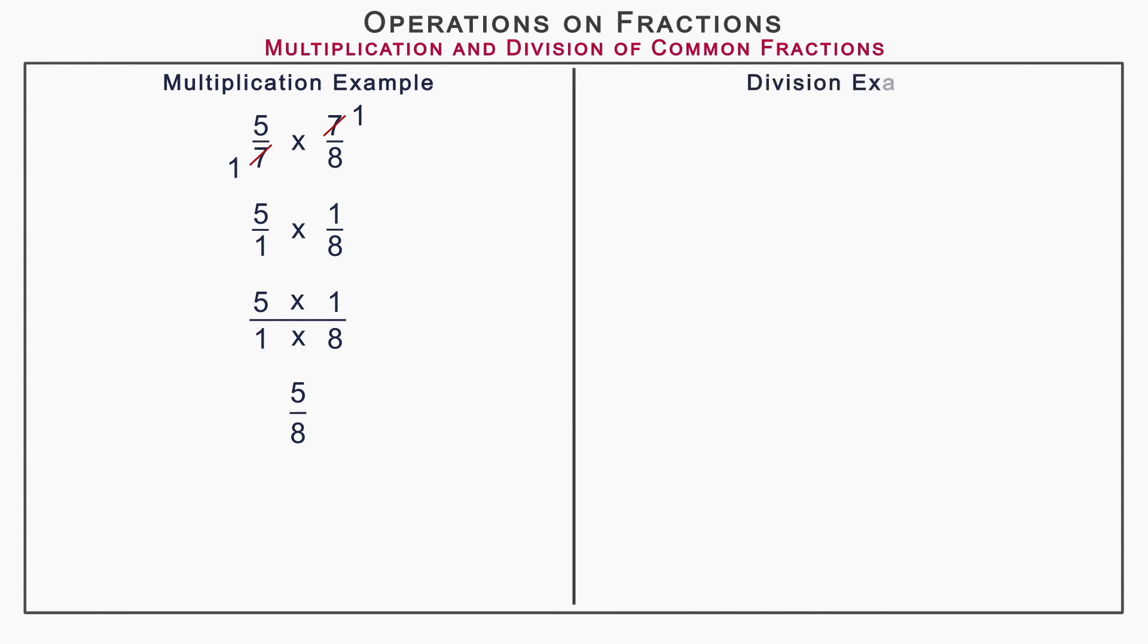Take an example for division: 5 upon 7 divided 7 upon 8. Division of common fraction is not possible. Here, division is converted into multiplication. So keep the first fraction as it is and change the division sign into multiplication. And take the reciprocal of the second fraction 7 upon 8, which is 8 upon 7. So we get 5 upon 7 into 8 upon 7.